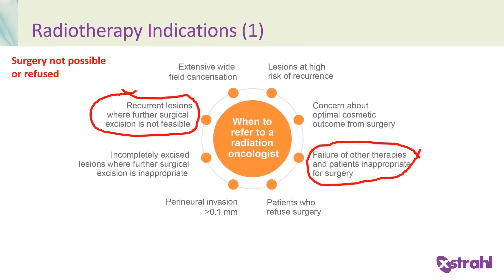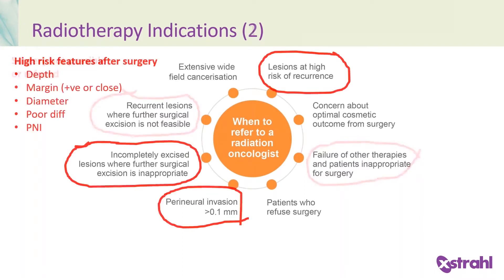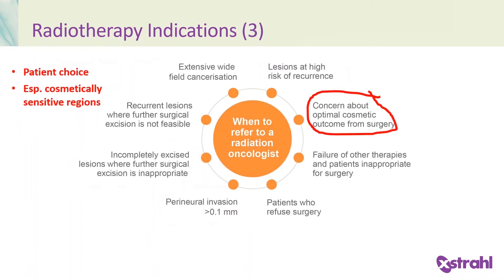What are the indications for radiotherapy? Particularly where surgery is either not possible or where it's refused. If there are high-risk features after surgery — for instance, a depth of more than four to six millimetres, a margin which is either positive or close (generally within a millimetre), diameter more than two centimetres, poor differentiation, and perineural invasion either of a nerve more than 0.1 millimetres, or of a named nerve with symptoms. Other indications include patient choice and particularly in cosmetically sensitive regions such as around the eye, the lips, the nose, and the ears.